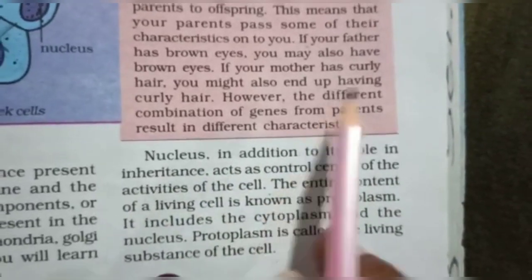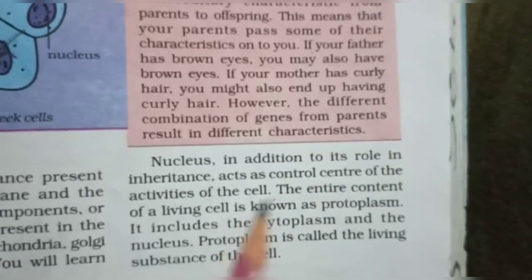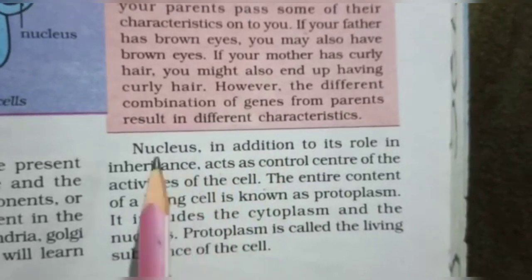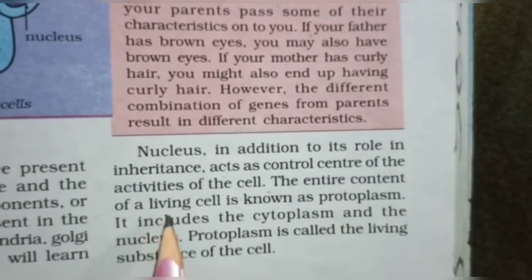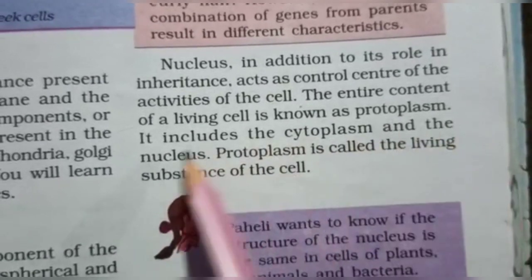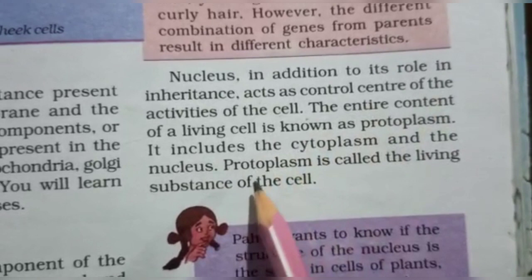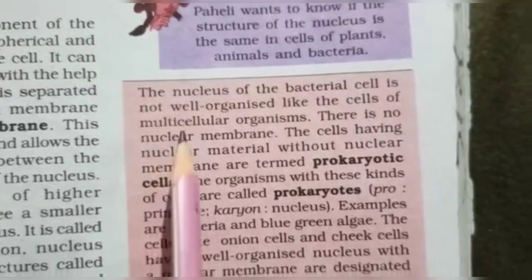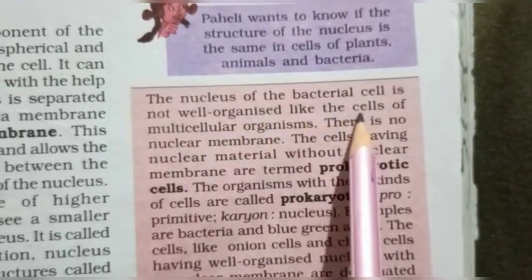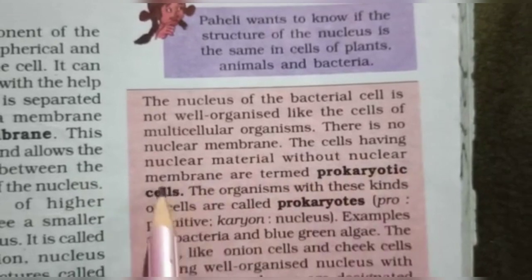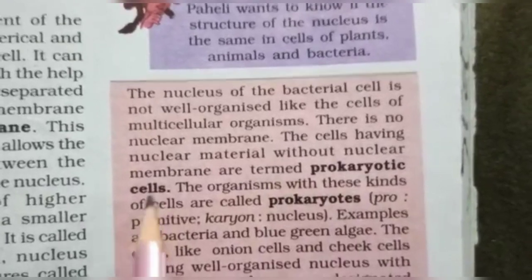The entire content of the living cell is known as protoplasm. It includes the cytoplasm and the nucleus. Protoplasm is called the living substance of the cell.